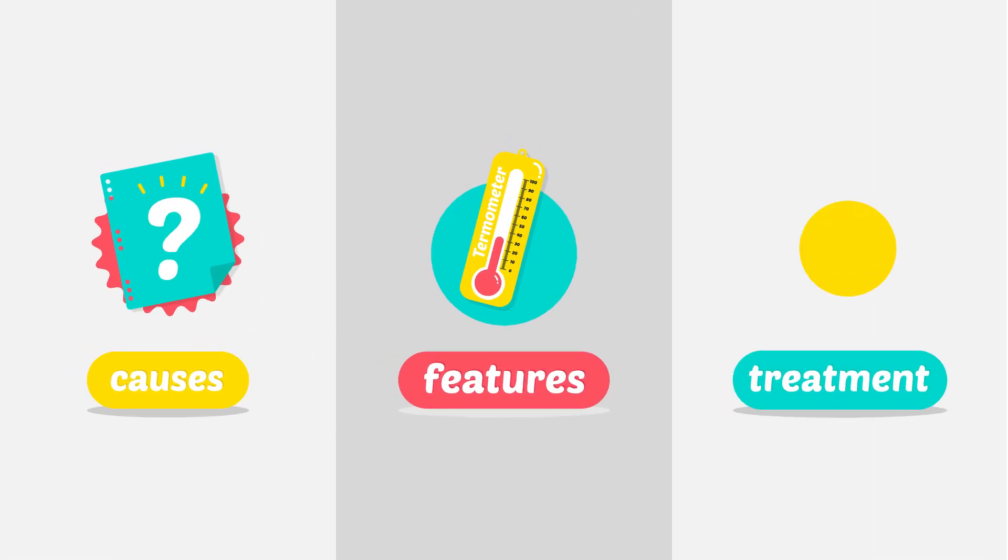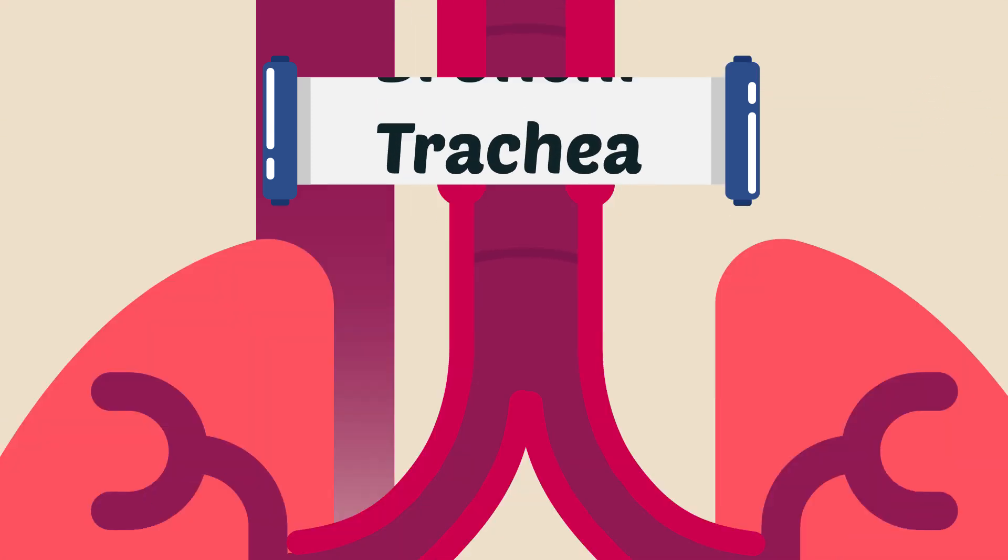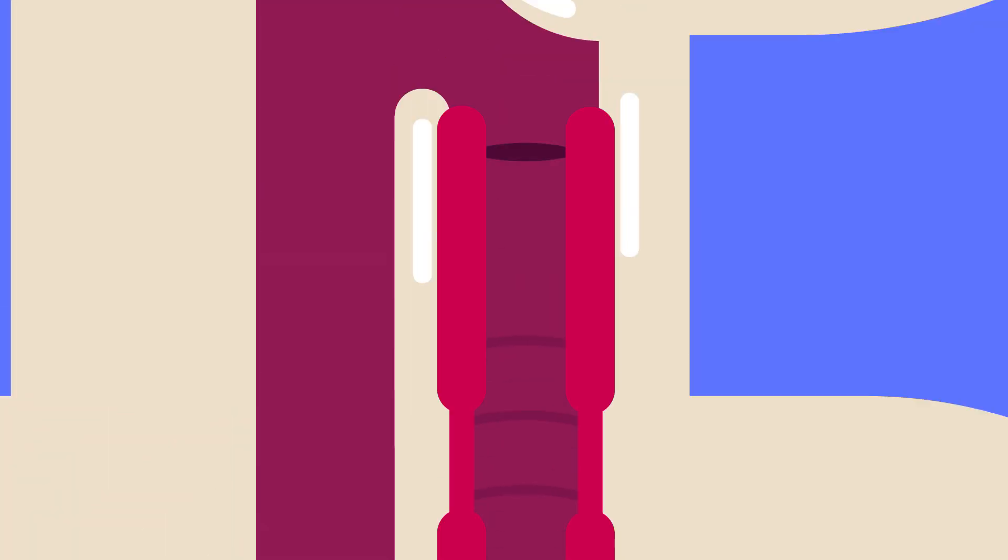Acute Laryngotracheobronchitis: Causes, Features, Treatment. What is Acute Laryngotracheobronchitis? It is an inflammatory condition of the larynx, trachea, and bronchi, more common than acute epiglottitis.